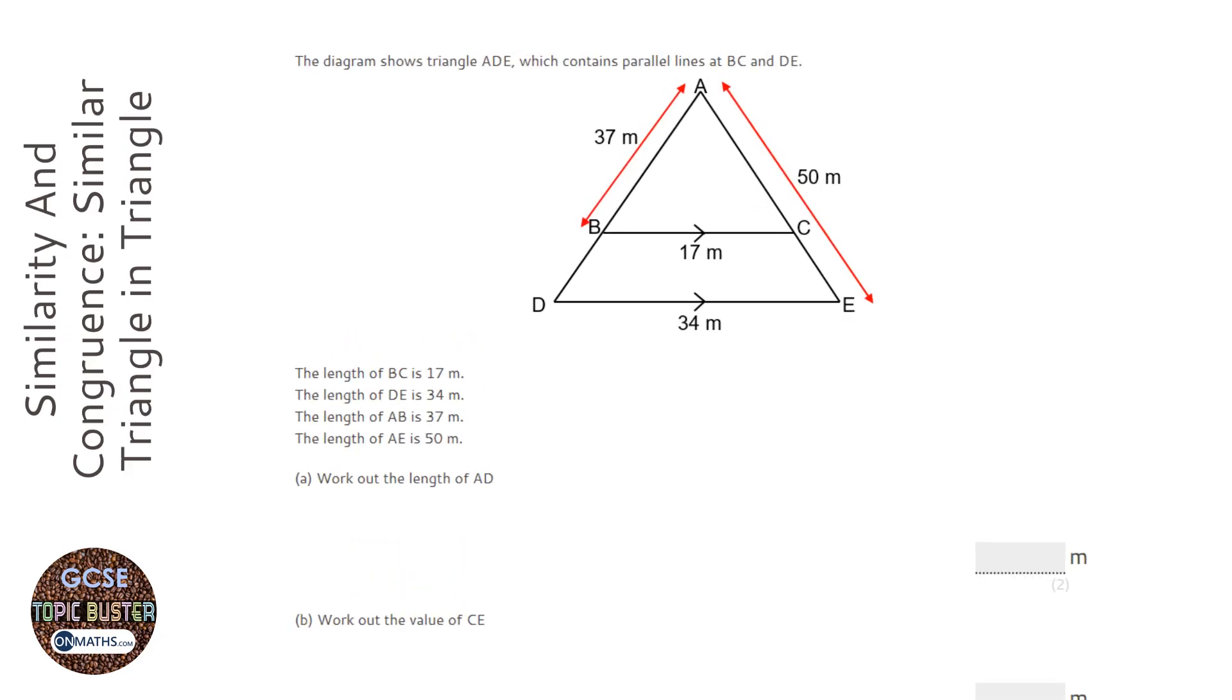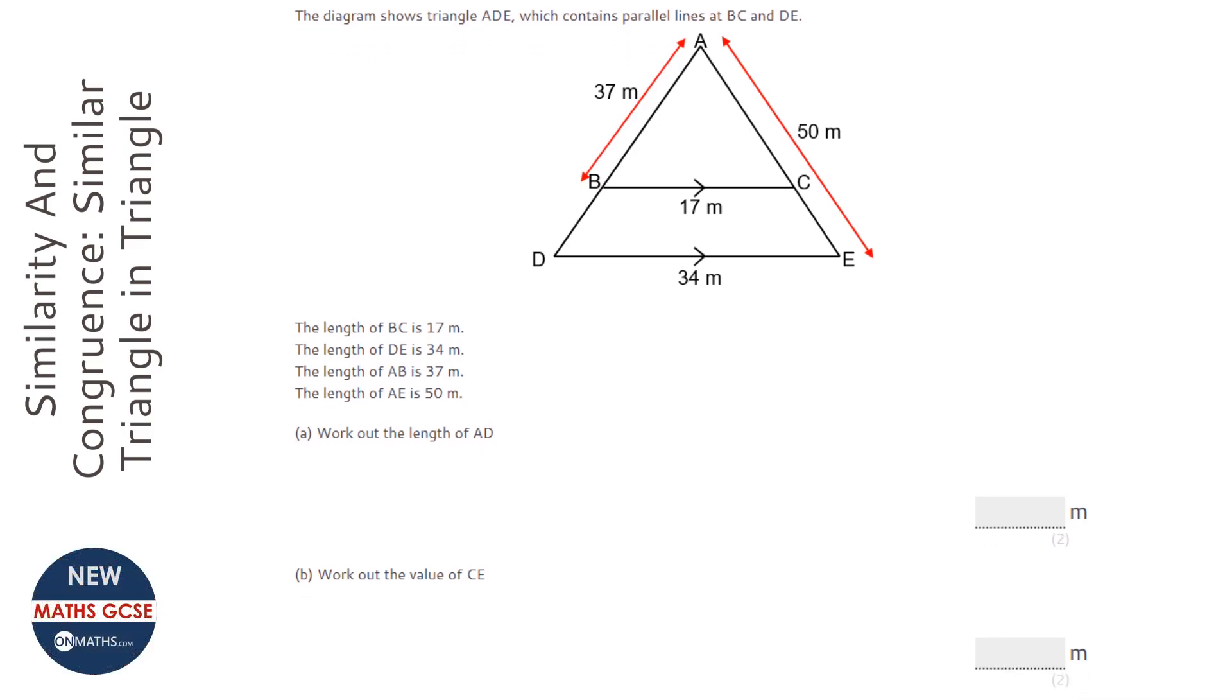OK, so this question is asking us to find unknown lengths. Now, the easiest way of approaching this question is to draw the two triangles, the little one and the big one, separately.